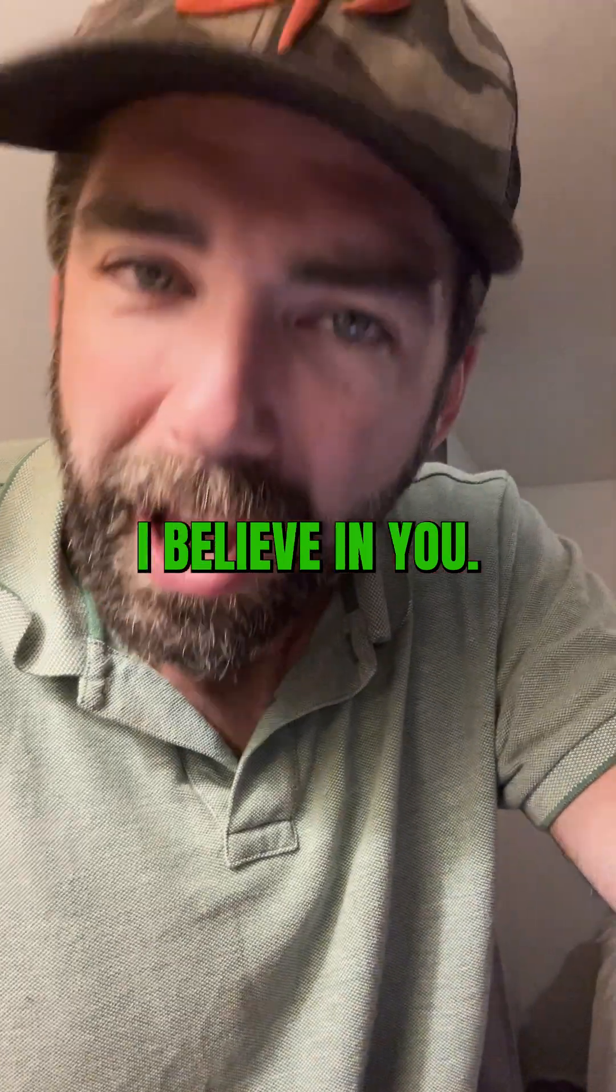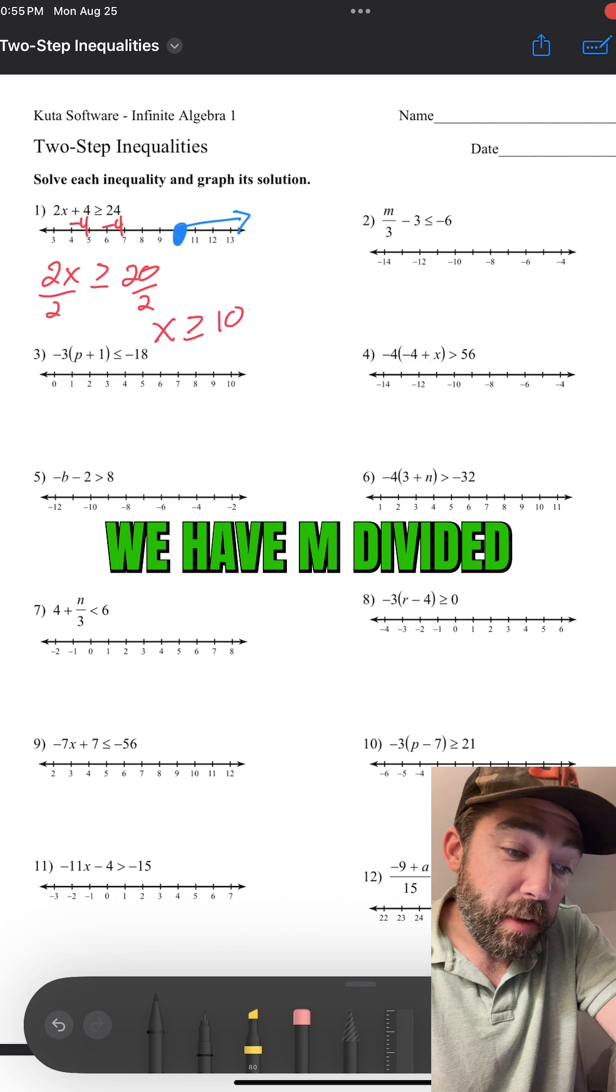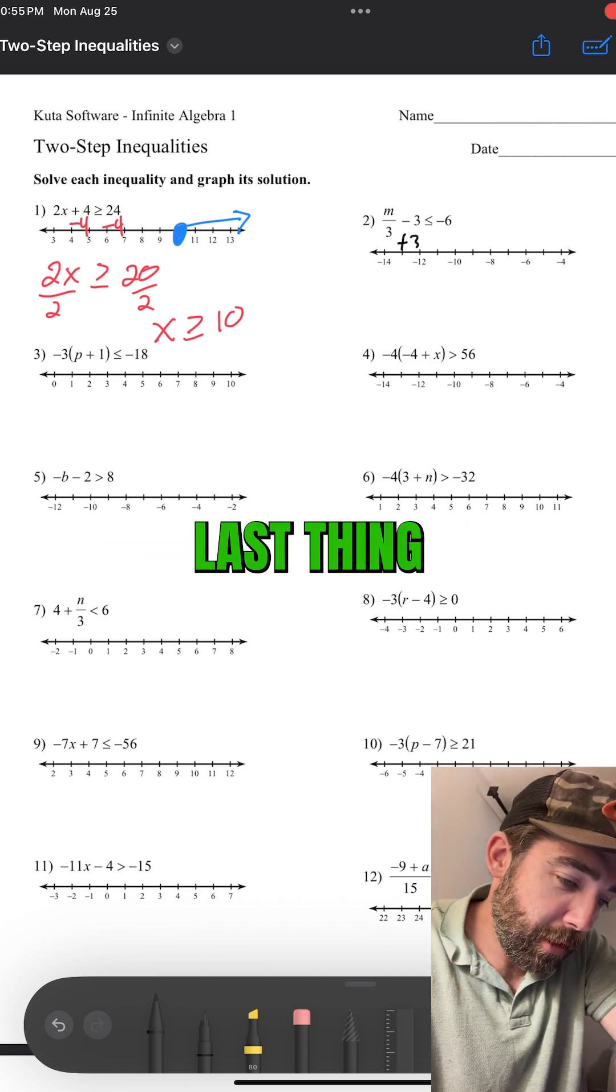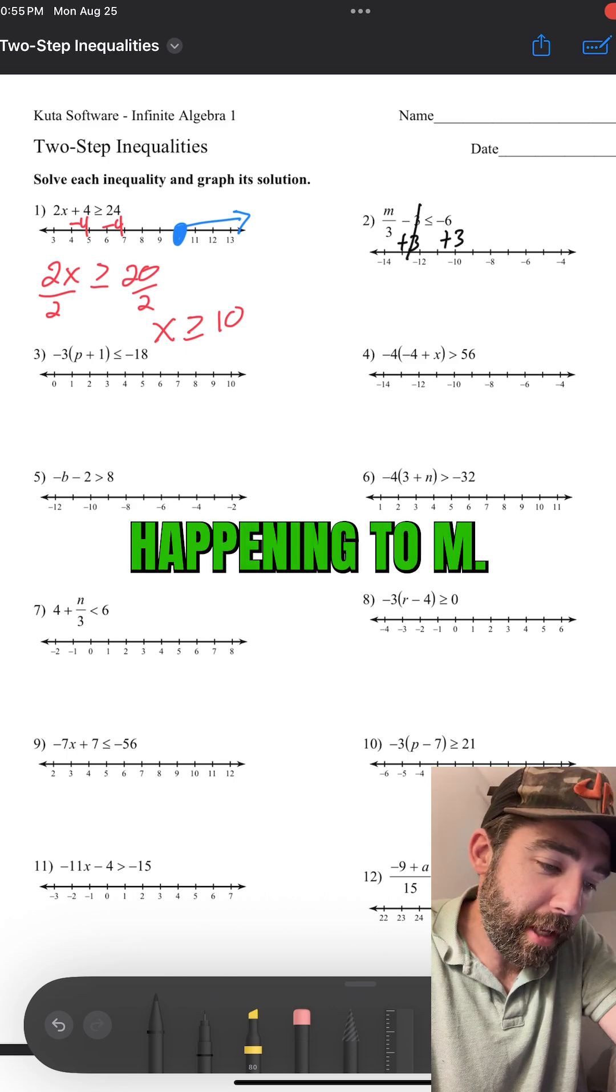One more. You can do it. I believe in you. We have m divided by three minus three. First thing you do, you add three. Always do the last thing that was happening to m.